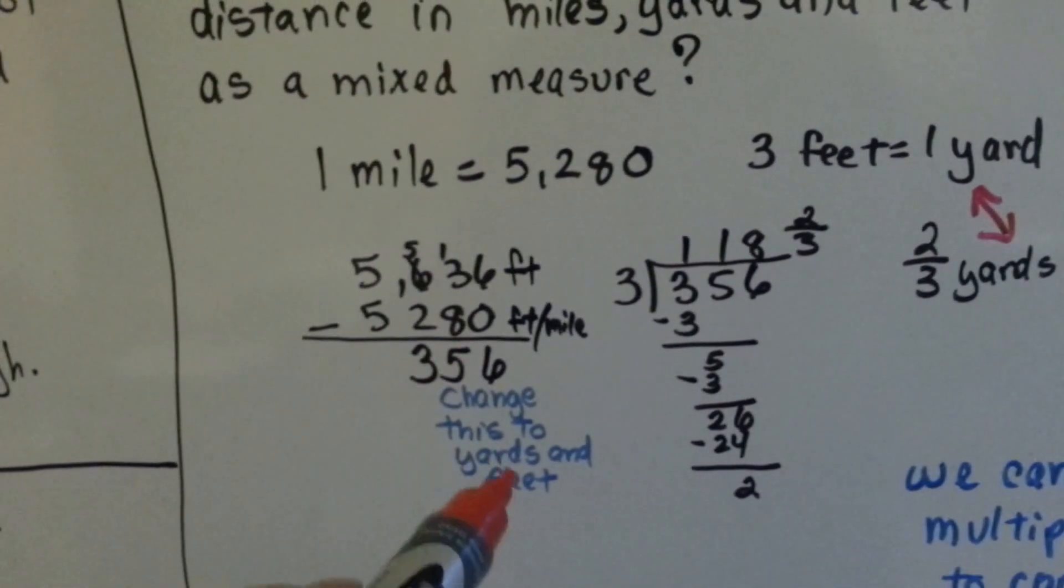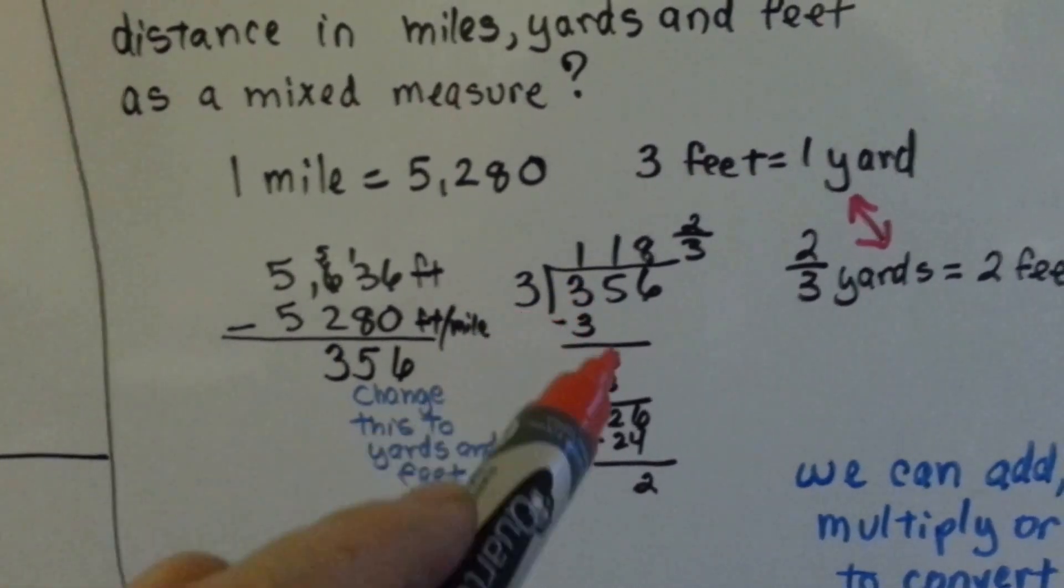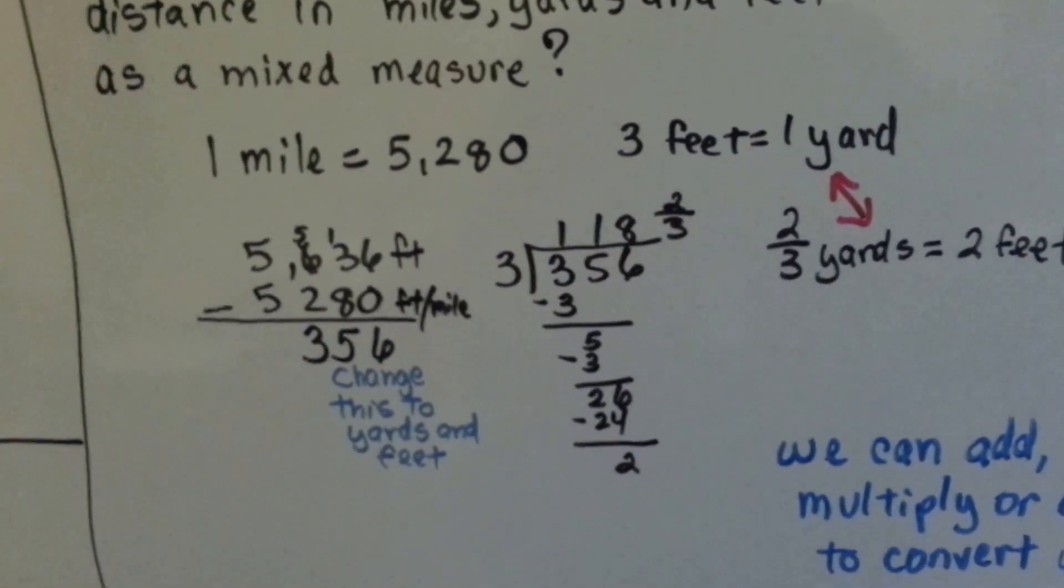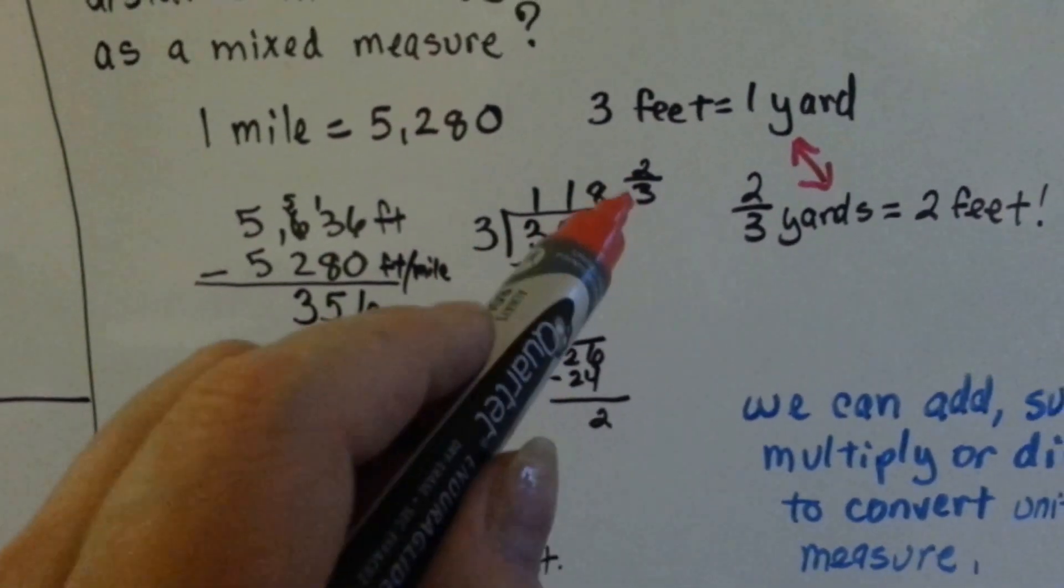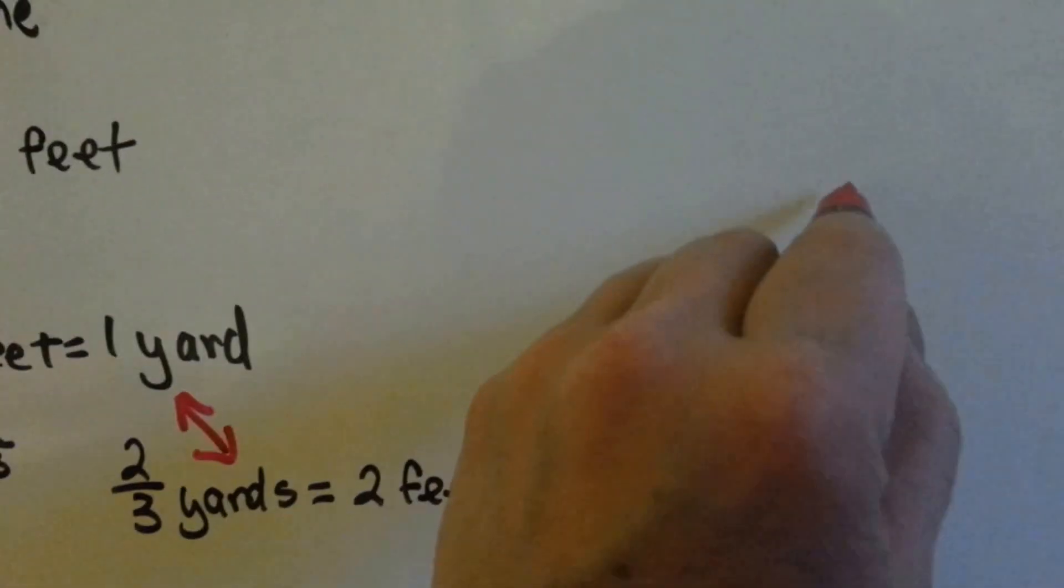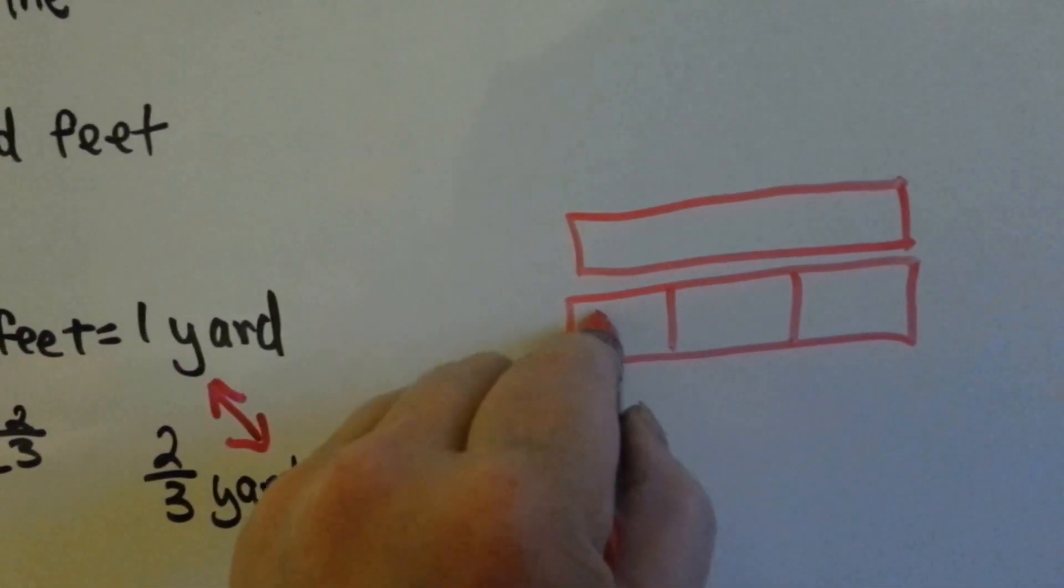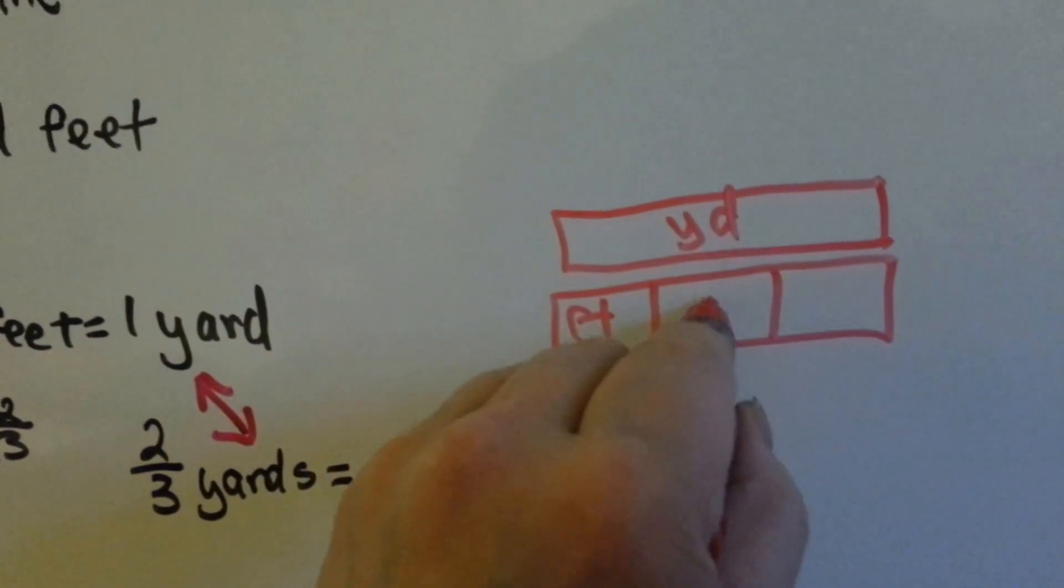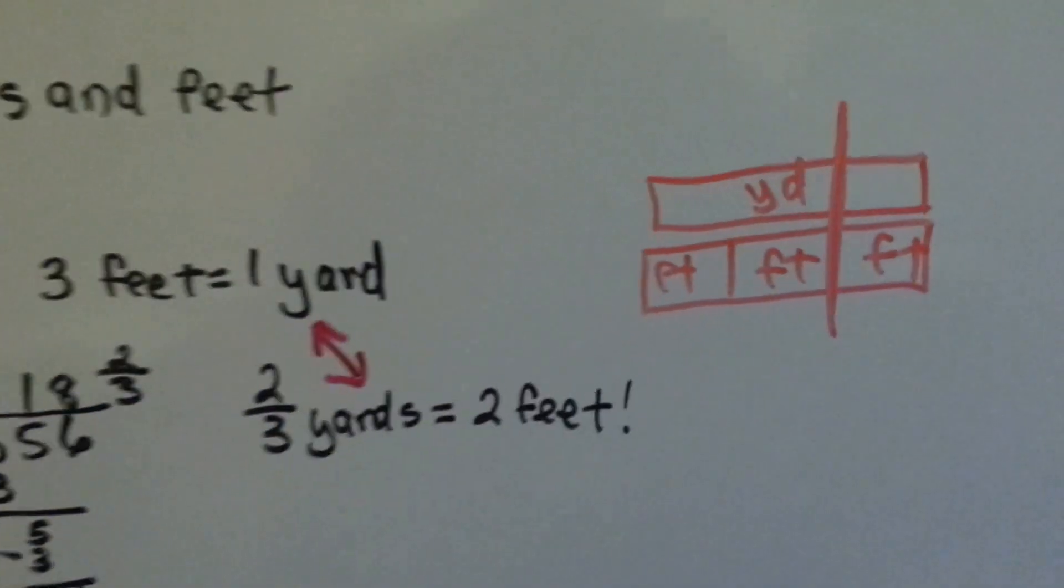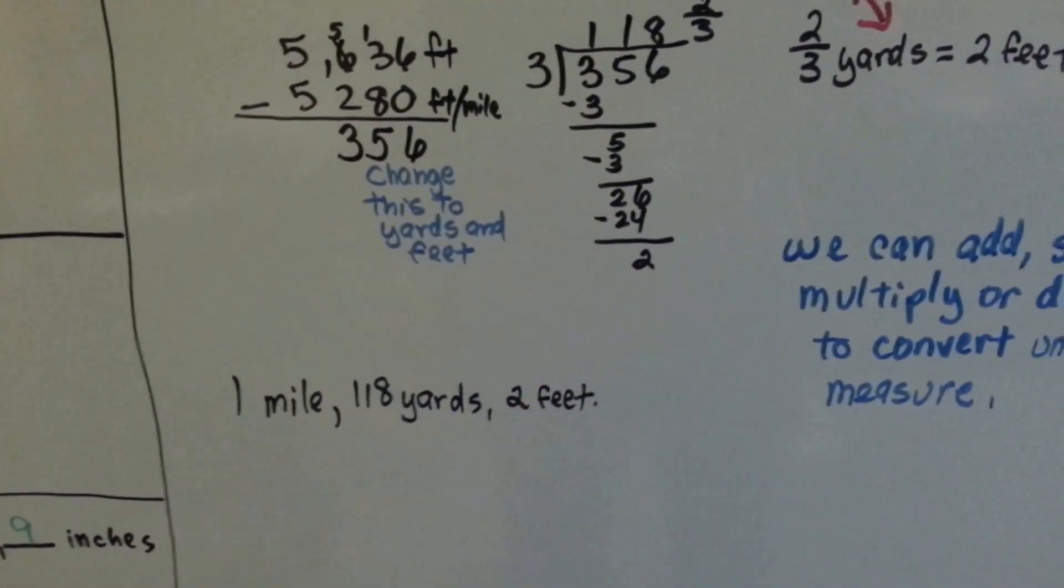We can change this to yards and feet. If there's three feet in a yard, we see how many threes can fit into 356. We did long division and found out that there was 118 and two-thirds yards. So now we know it's one mile and 118 yards, but the two-thirds yard is two feet, because there's three feet in a yard. If that's one yard, and there's three feet in a yard, then two-thirds of a yard would be two feet, because you're splitting the yard into threes. So we know he walked one mile, 118 yards, and two feet.